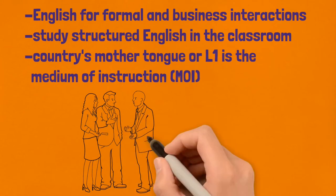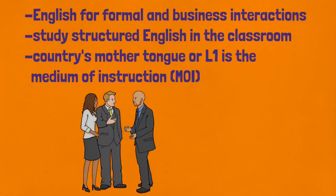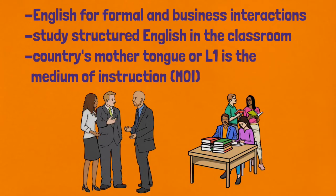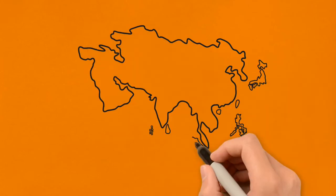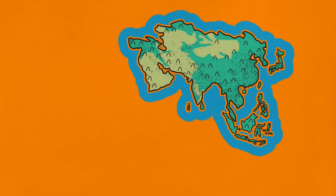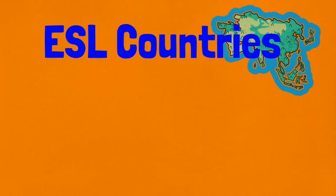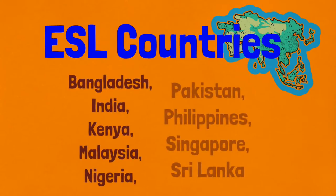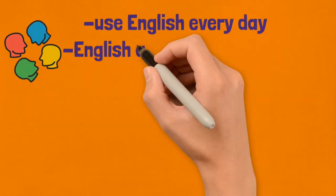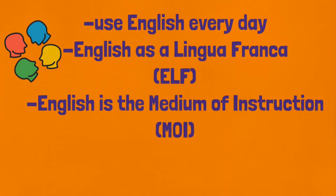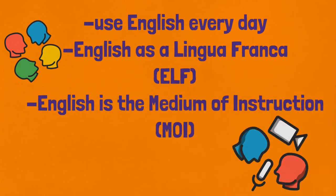Also, the country's mother tongue is the medium of instruction, which limits learning to English classes offered. On the other hand, in English as a second language countries, people use the language in conjunction with their mother tongue. English is the country's lingua franca or common language. People speak it at home, work, and social gatherings. Many children learn English before starting school, and English is the medium of instruction.